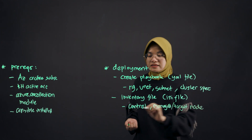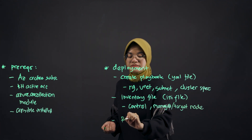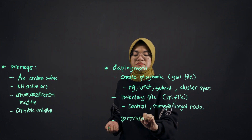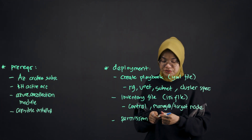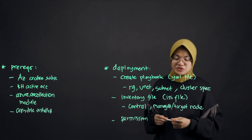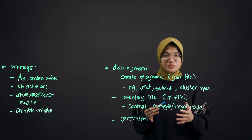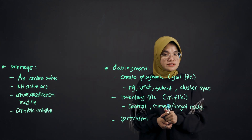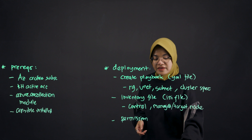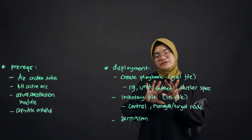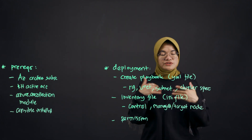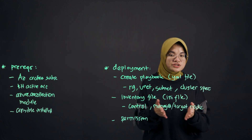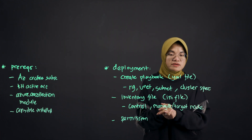Last but not least, and most importantly, you would need to provide permissions or grant access to Ansible to be able to use Azure resources — for example, the service principals. That is pretty much it for how to deploy it. After you create all these files, you can simply deploy your cluster using the command ansible-playbook.